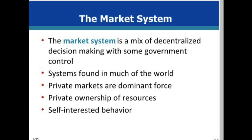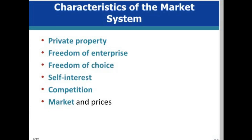In the U.S. version of capitalism, the government plays a substantial role. Private individuals and firms own most of the private property resources of land and capital. Private property, coupled with the freedom to negotiate binding legal contracts, enables individuals and businesses to obtain, control, use, and dispose of this property. Private property rights encourage investment, innovation, exchange of assets, maintenance of property, and economic growth. Private rights extend to intellectual property through patents, copyrights, and trademarks.